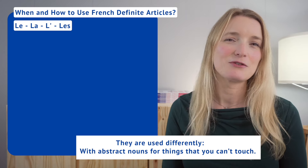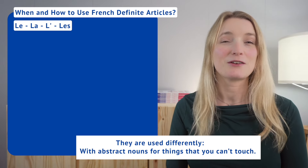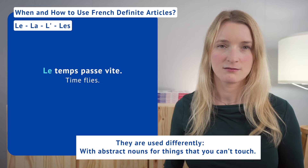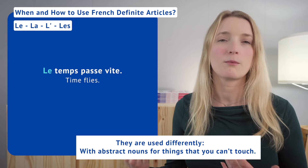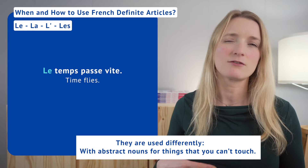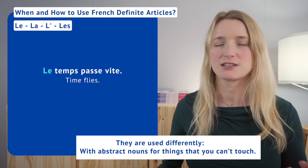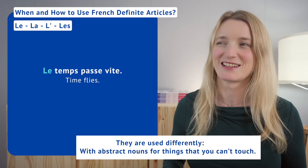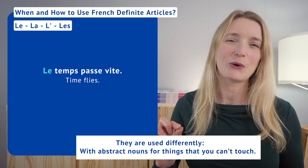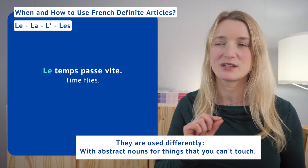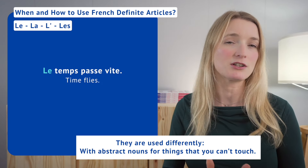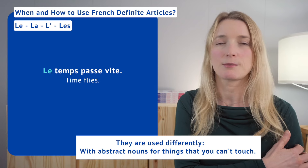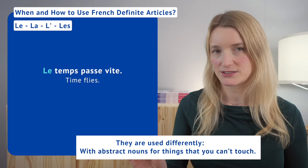We use definite articles with abstract nouns — things you can't touch. For example: le temps passe vite — 'time flies' or 'time passes fast.' In French we almost always have an article before a noun — I would say 99% of the time — so le temps passe vite.